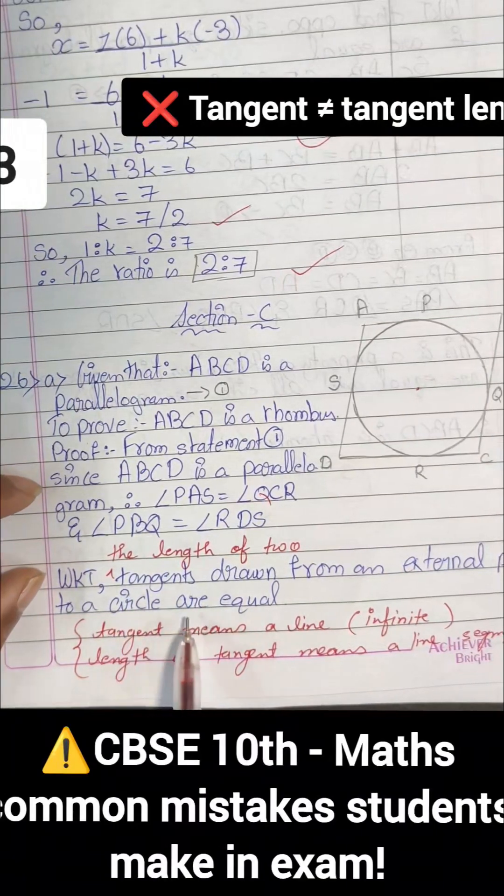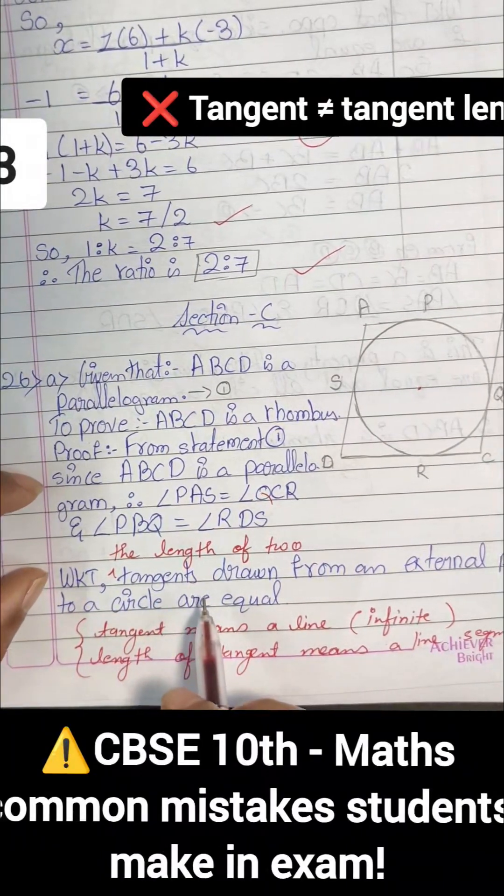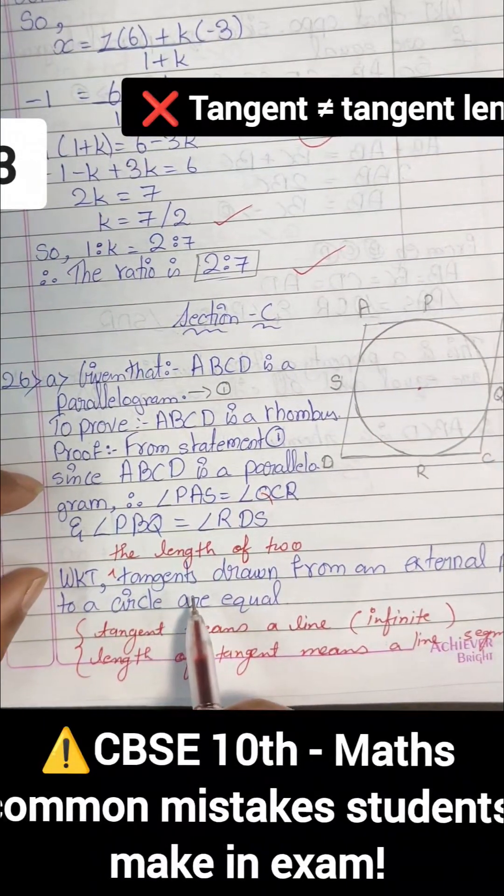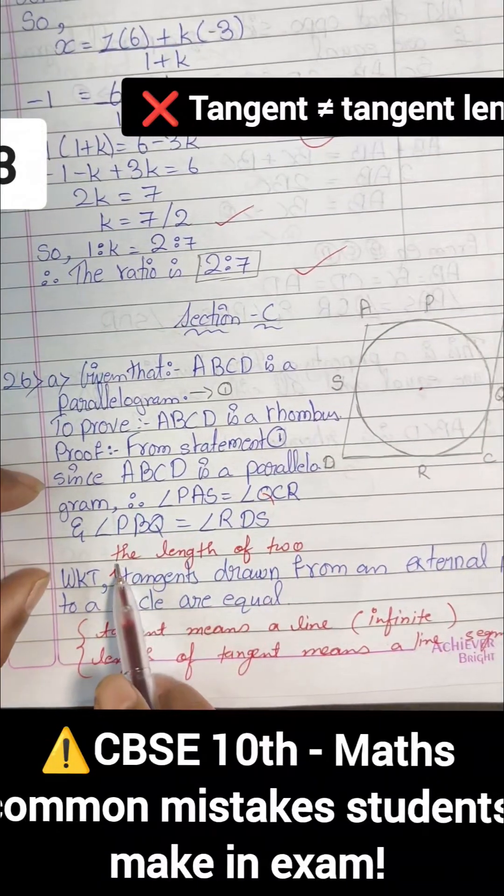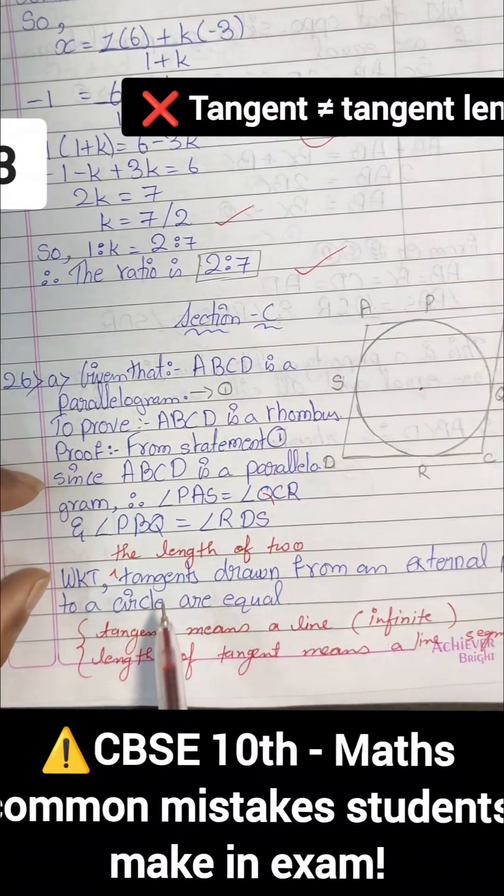One more thing I would like to tell here is, sometimes students write that tangents are equal. Tangents are actually lines, so they are infinite. Here, actually the child wanted to say that the length of two tangents are equal.